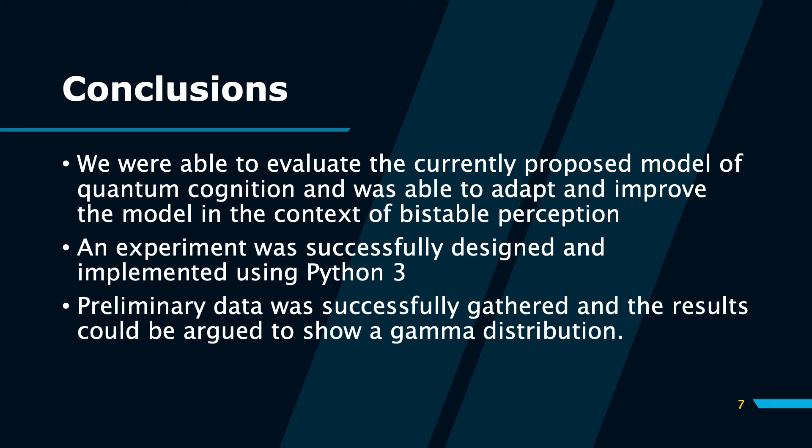We were able to successfully design and implement an experiment to test our improved model of bi-stable perception. The fact that this experiment was successfully implemented solely using Python 3 means that any future work can easily be accessible, provided that the source code is available. If you scan the QR codes on the previous slide, you will also have full access to the source code on Pastebin. While the preliminary data gathering was successful, we could not get any definite results, but we could argue them to follow a gamma distribution.